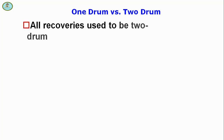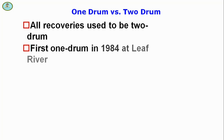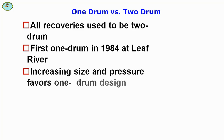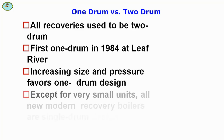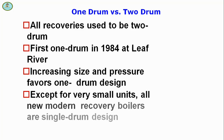All recovery boilers used to be two-drum designs. The first one-drum boiler was installed in 1984 at Leaf Rivers. Increasing size and pressure requirements favor the one-drum design, and except for very small units, all new modern recovery boilers are single-drum design.